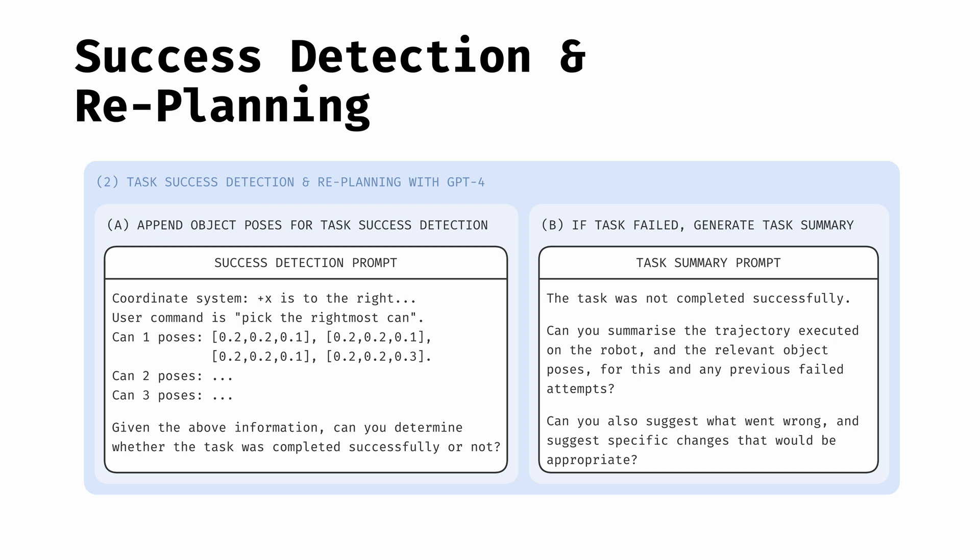Then, based on its inherent knowledge about the nature of the task, and the object poses provided, the LLM determines whether the task was successful or not. If not, it proceeds to generate a summary of the failed trajectory and relevant object poses, as well as appropriate changes to be applied to the trajectory to complete the task successfully.